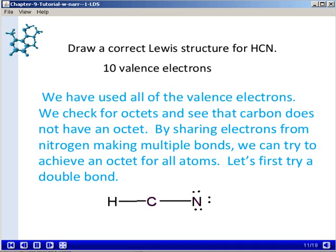At that point, we've used all of the 10 valence electrons. So we check for octets, and we see that carbon does not have an octet at this point. By sharing electrons from nitrogen and making multiple bonds, we can try to get an octet for all the atoms, including the carbon. So let's first try a double bond.